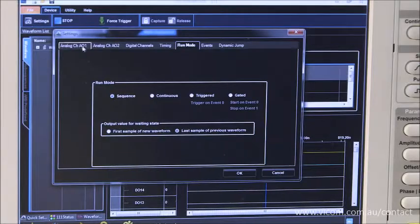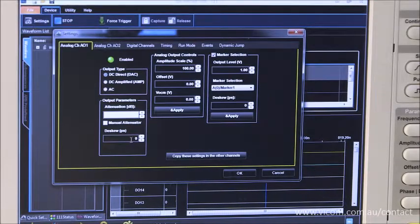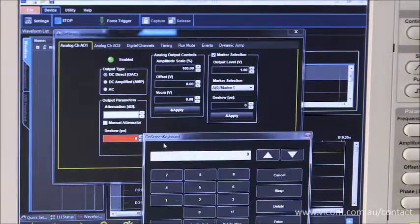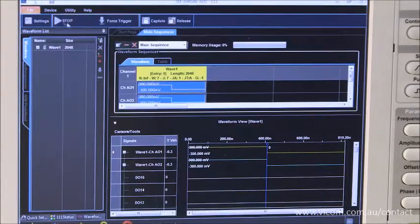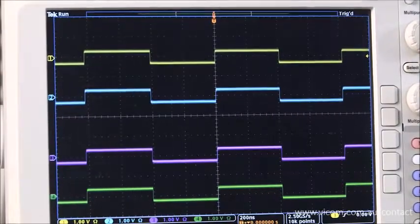To compensate the skew, we can simply apply 48 nanoseconds D-Skew on the master unit. Then the phase is aligned.